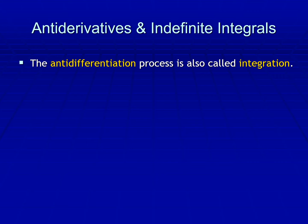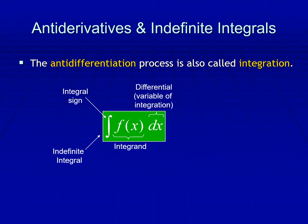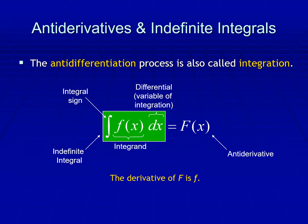The anti-differentiation process is also called integration. So if we have the anti-derivative of f of x dx, this is the integral sign, this is the integrand, and this is the differential or variable of integration — the dx. The whole of this one we call the indefinite integral, which is equal to f of x or the anti-derivative. So the derivative of F is f, meaning F prime of x is equal to f of x.